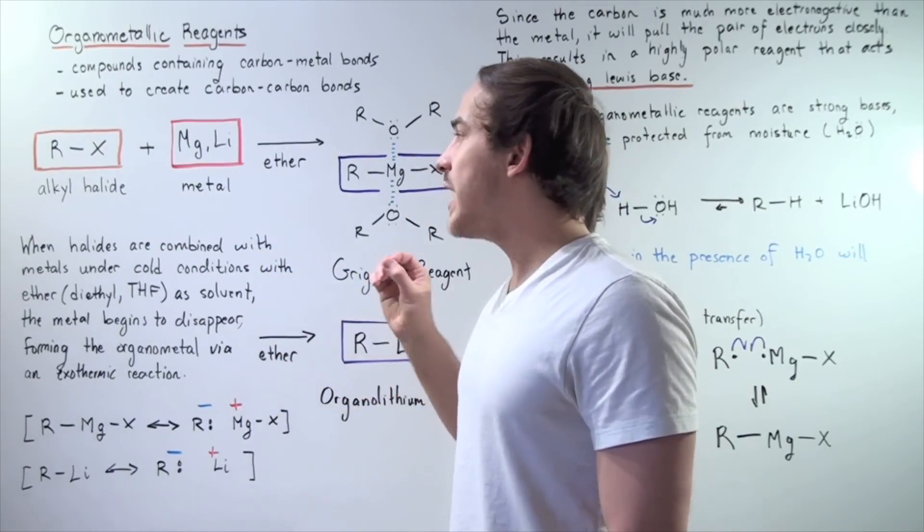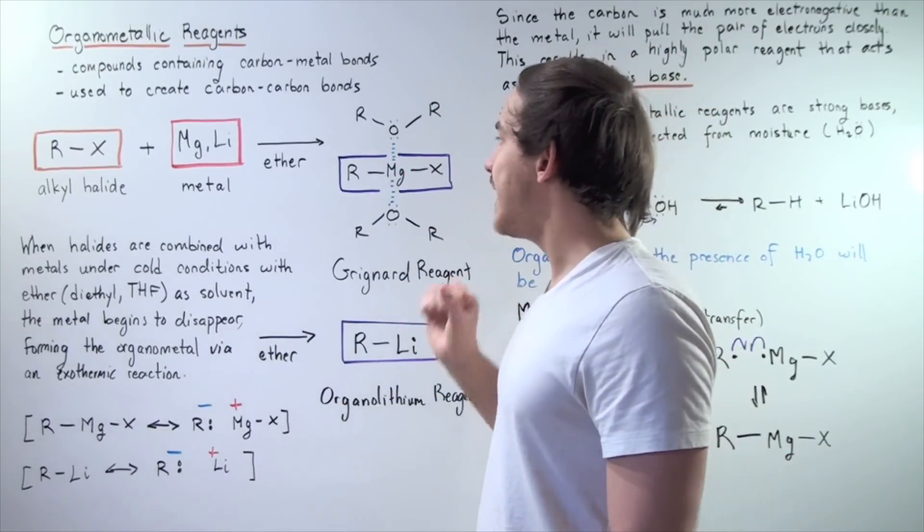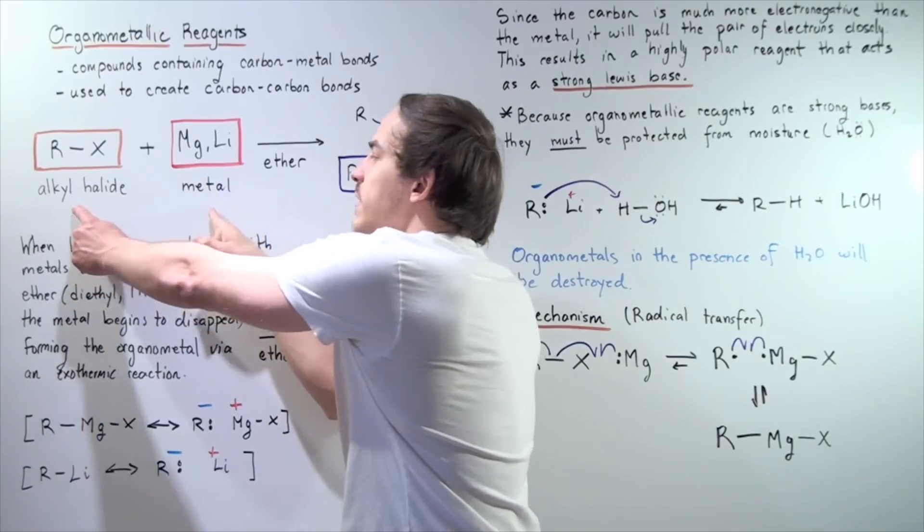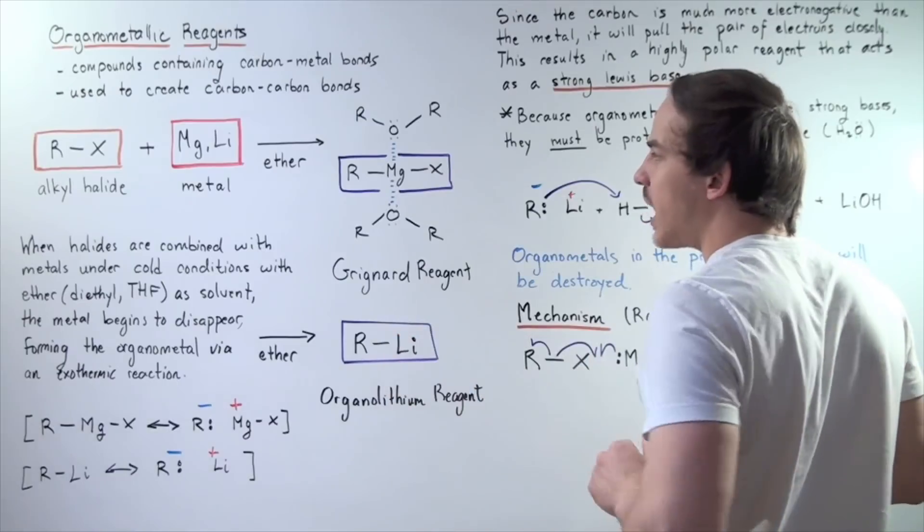the organometallic reagent will break. It will dissociate, and we'll see why later. So, when these two reagents are used, we produce the following two compounds.